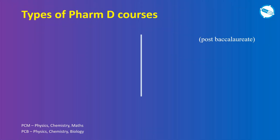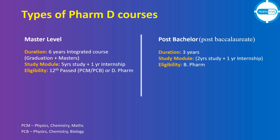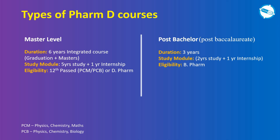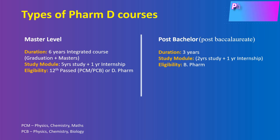There are two types of Pharm D courses. The first is the master-level integrated course — a six-year program combining graduation and masters, with five years of study and one year of internship, similar to MBBS. Eligibility is 12th pass, or after D.Pharm, you can also pursue this course. The second type is post-bachelor Pharm D, with a duration of three years — two years of study and one year of internship — requiring a B.Pharm graduation.